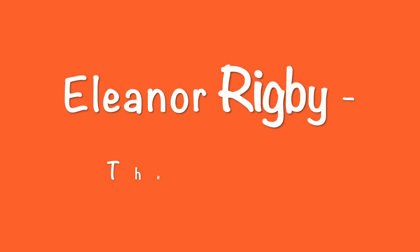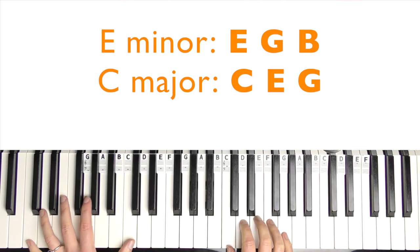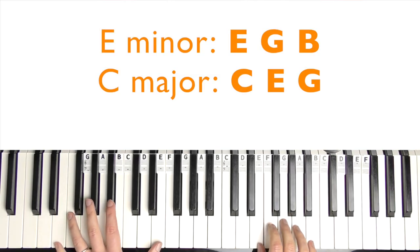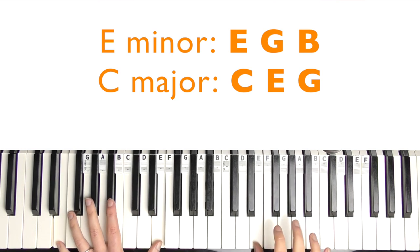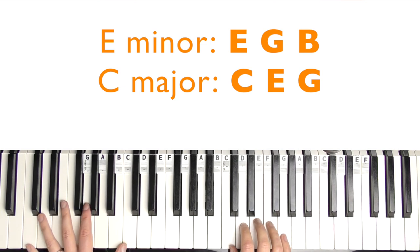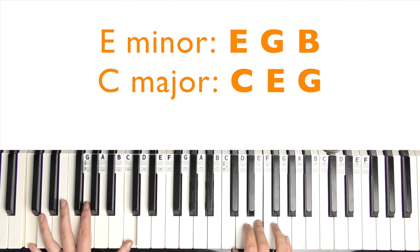The next one is Eleanor Rigby by The Beatles. So the chords we need is E minor, which is E, G, B. And then C major, which is C, E and G. Obviously playing E and then C's in the left hand.